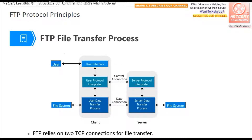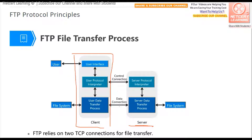In the FTP model, one part is the client and the other part is the server. When FTP is working, the client and the server need to establish two TCP connections.